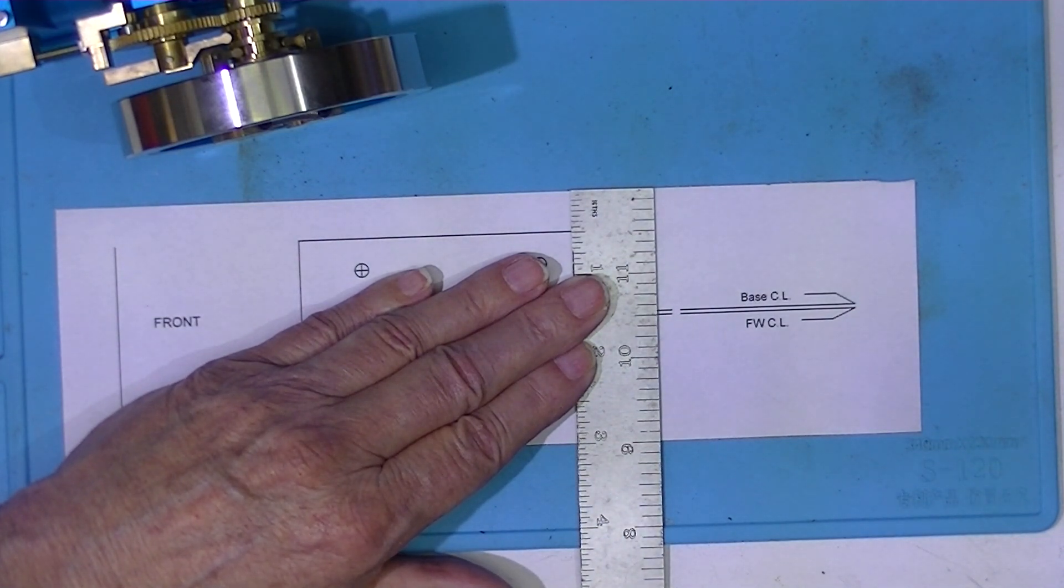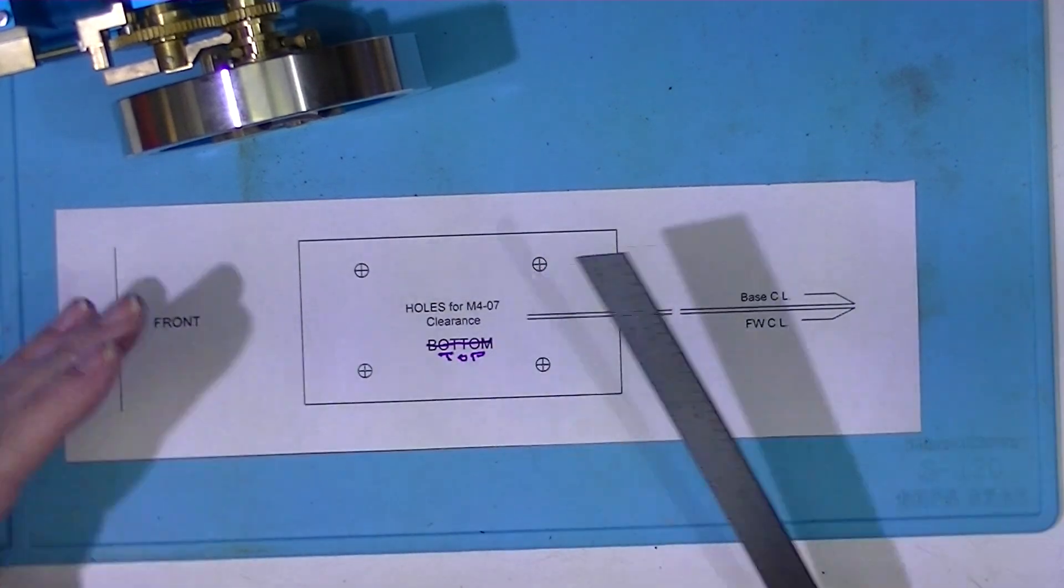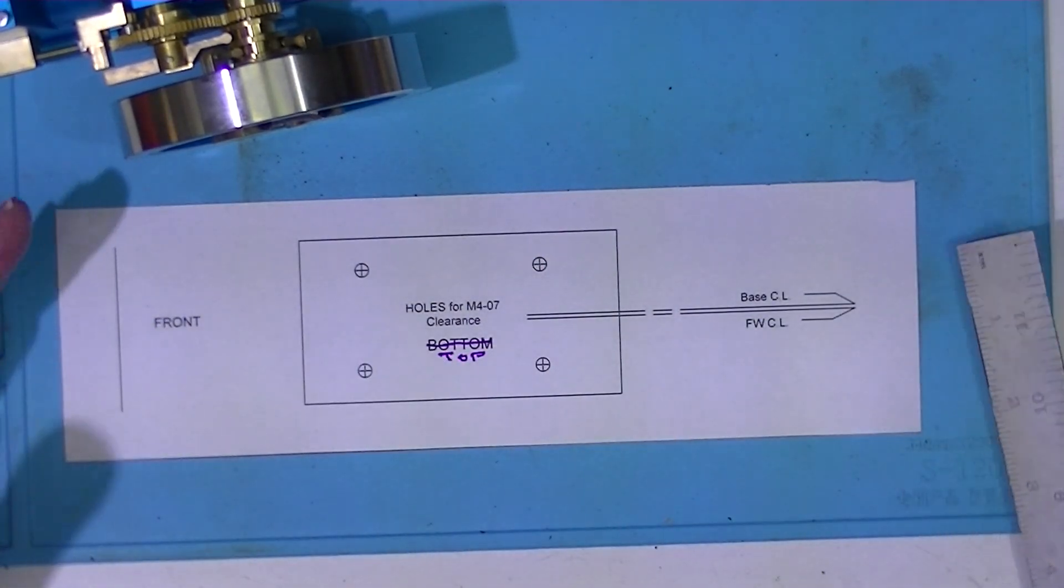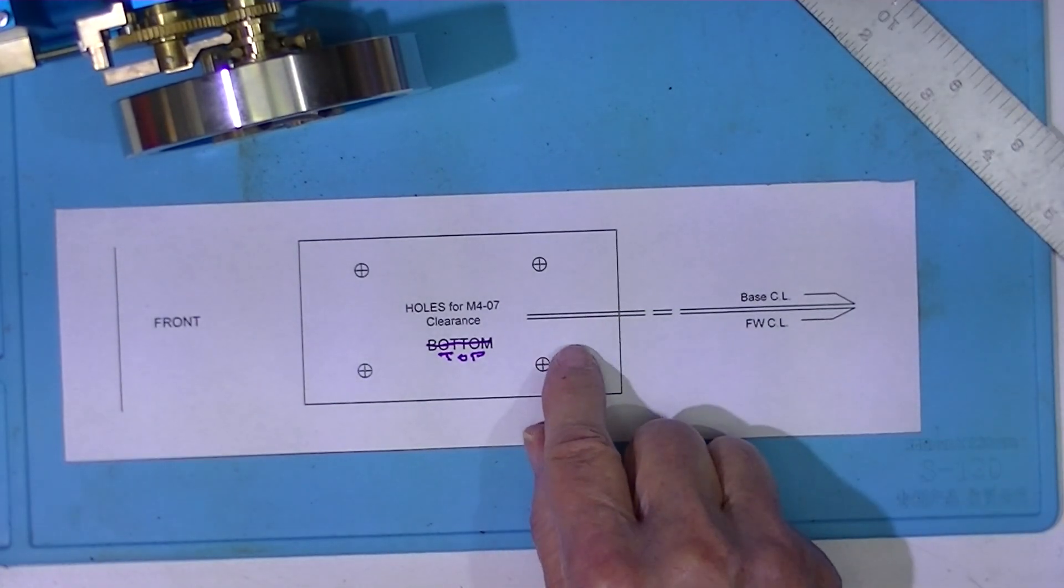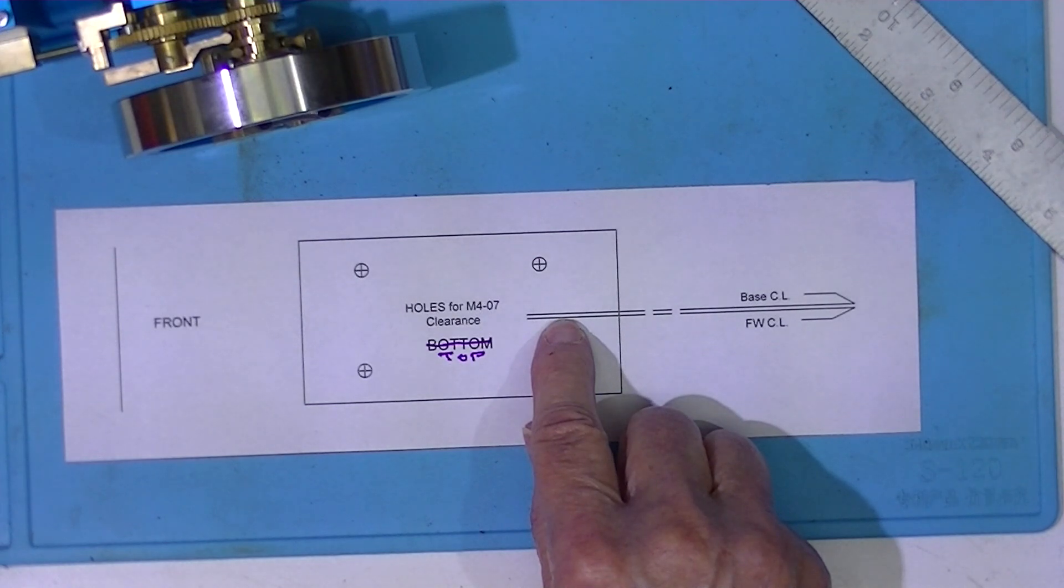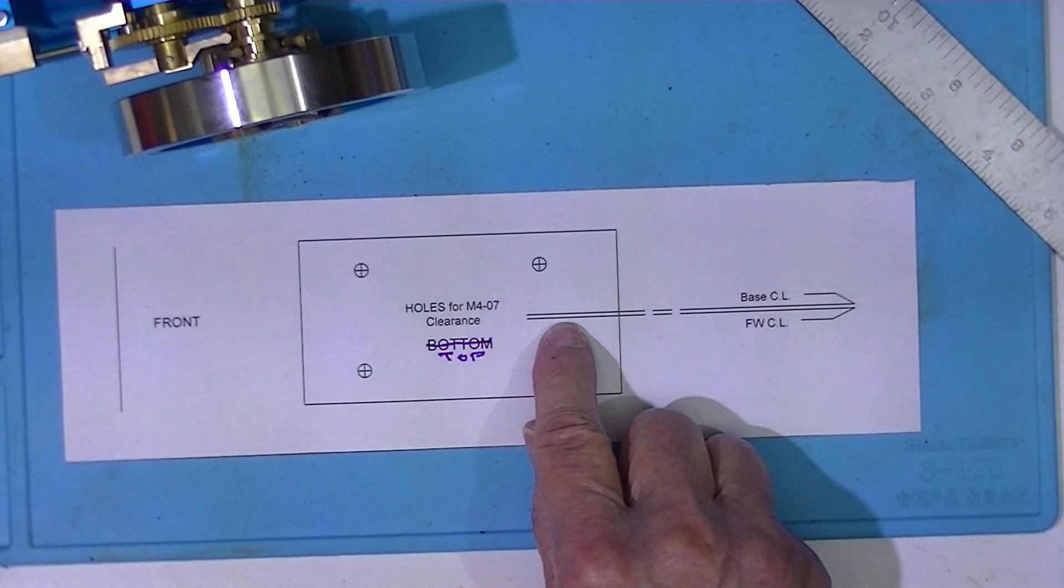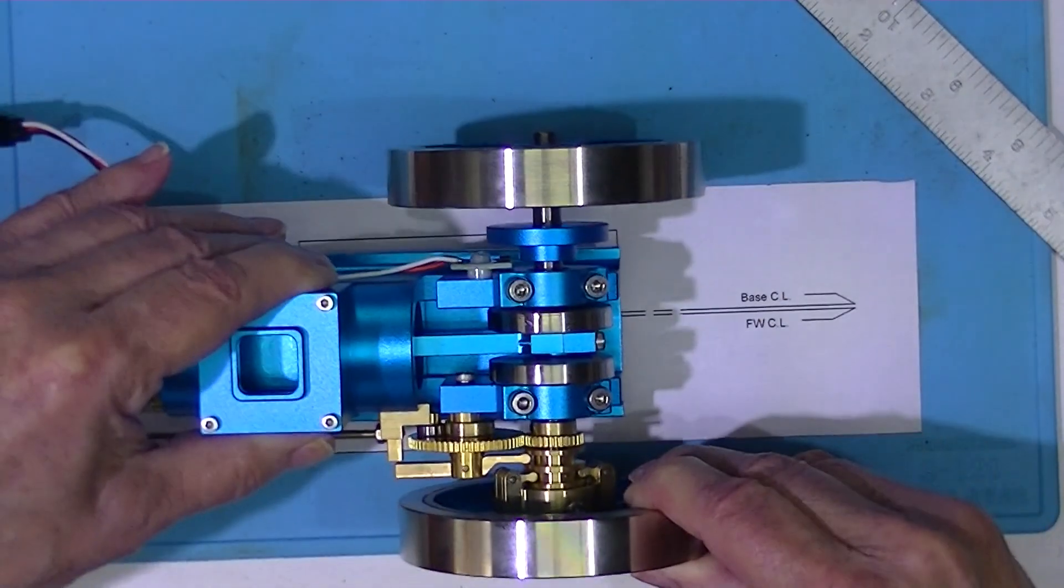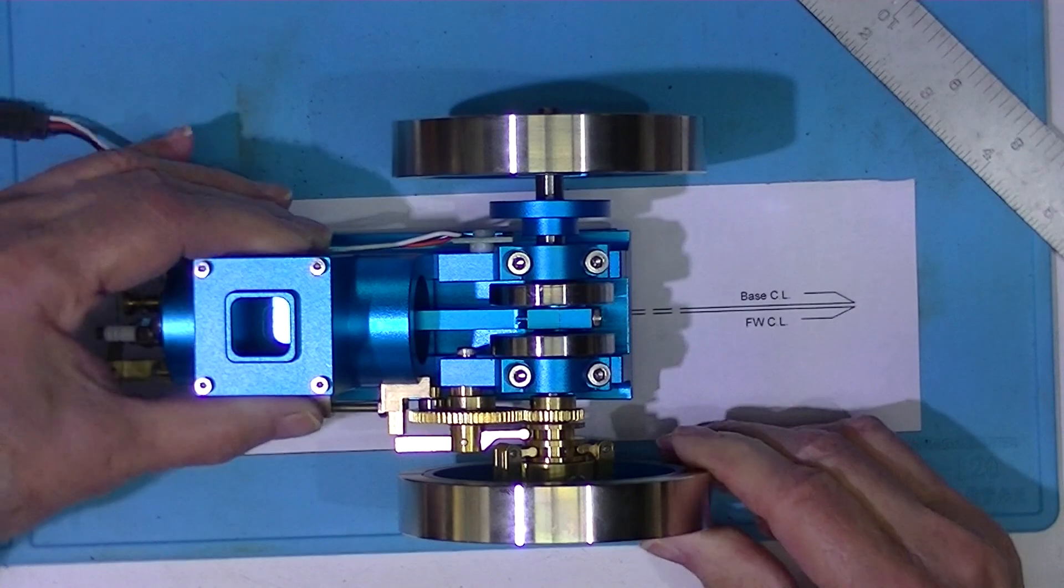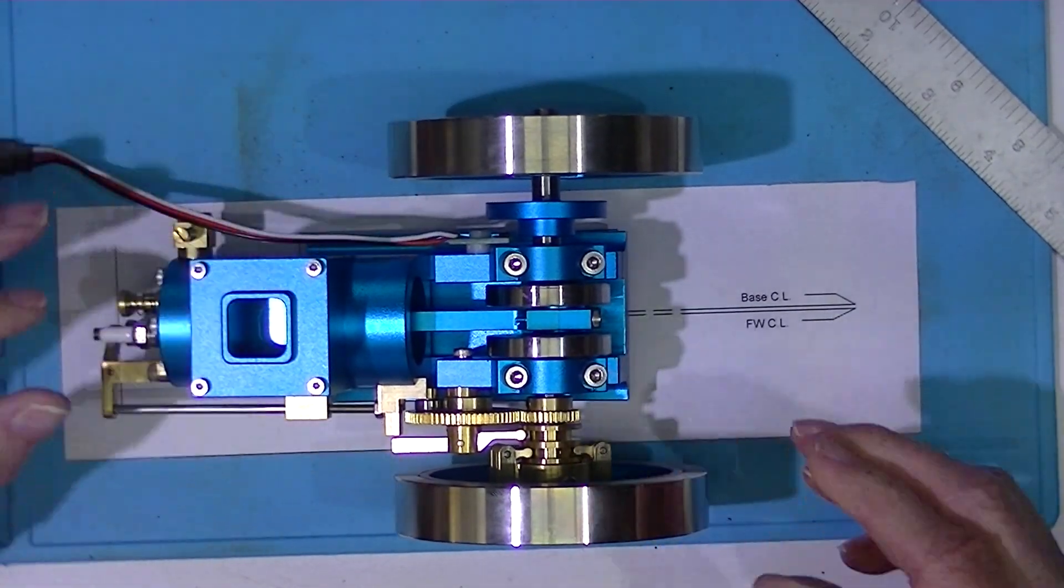I made myself a template—the length doesn't matter, that's just an eight and a half by eleven sheet of paper. The centerline of the base and the centerline between the flywheels is offset by about three sixty-fourths of an inch. So I want to center the flywheels on my piece of aluminum, not the base.